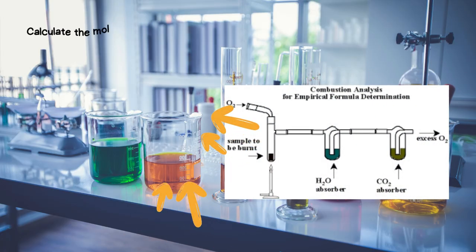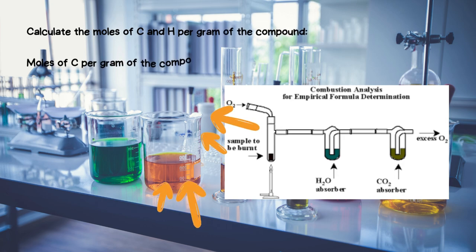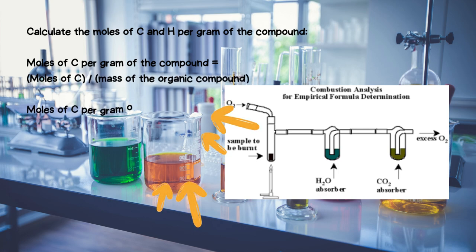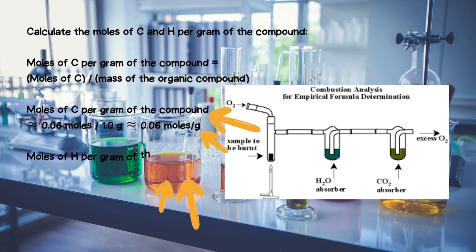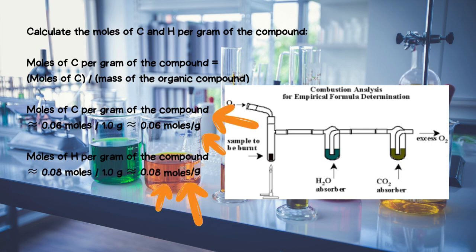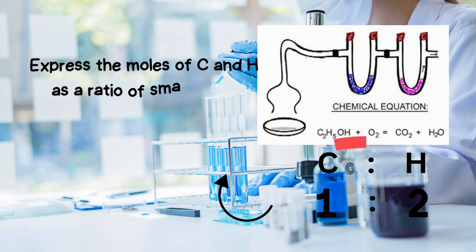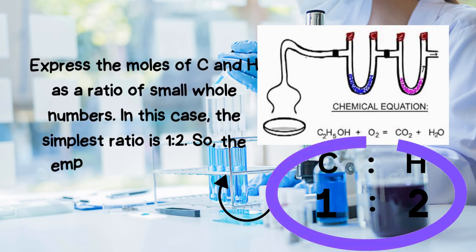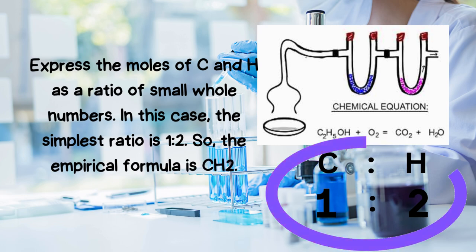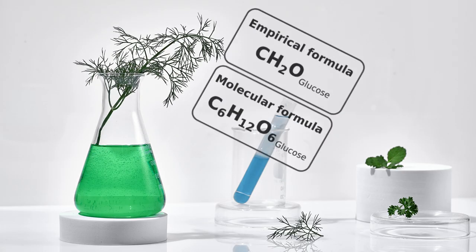Calculate the moles of C and H per gram of the compound. Moles of C per gram equals 0.06 moles divided by 1.0 gram = 0.06 moles per gram. Moles of H per gram equals 0.08 moles divided by 1.0 gram = 0.08 moles per gram. Now express the moles of C and H as a ratio of small whole numbers. In this case, the simplest ratio is 1 to 2, so the empirical formula is CH₂.